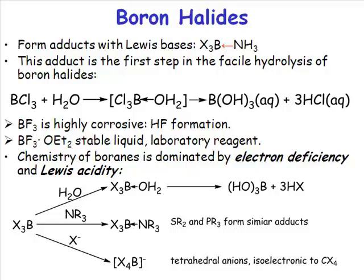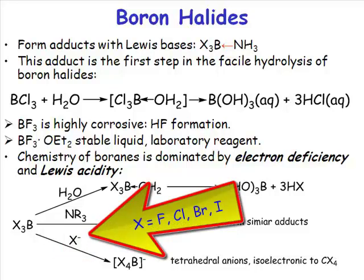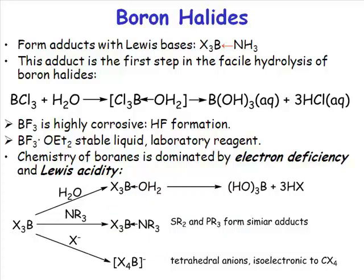Your base does not have to be neutral. The definition of a Lewis base is simply something which is a lone pair donor, and it's perfectly possible to have Lewis base donors which are anionic. A good example of an anionic Lewis base donor is X⁻, where X is a halogen atom — so X⁻ is a halide ion. Boron trichloride will form an adduct with the chloride anion.